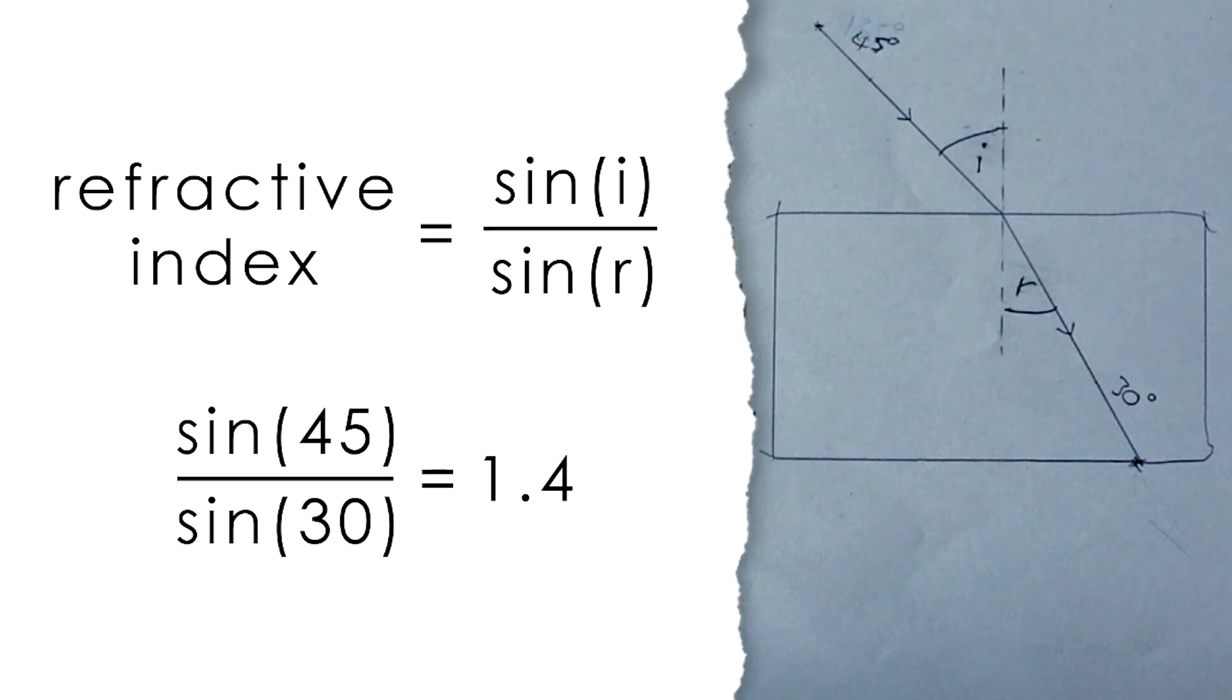What we do is take the sine of the angle of incidence, that's 45, so sine 45, over sine 30, so sine of I over sine of R, and that gives us 1.4. So that means that the refractive index of this perspex is 1.4.